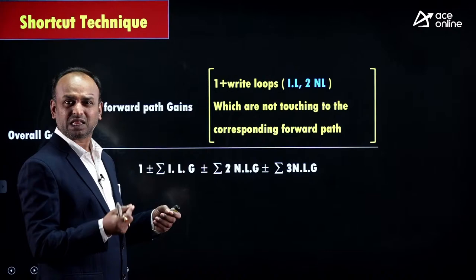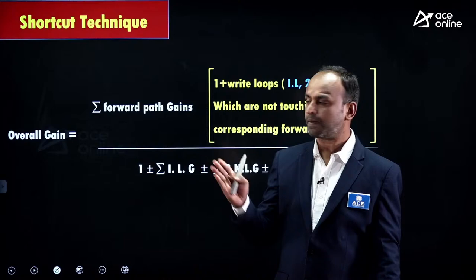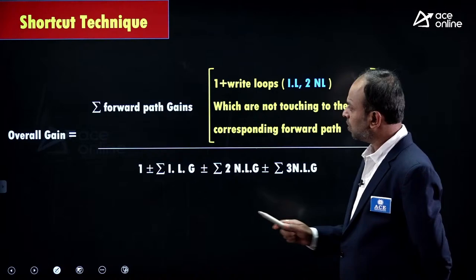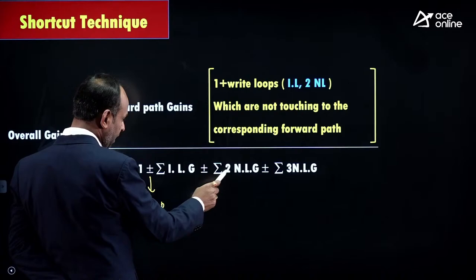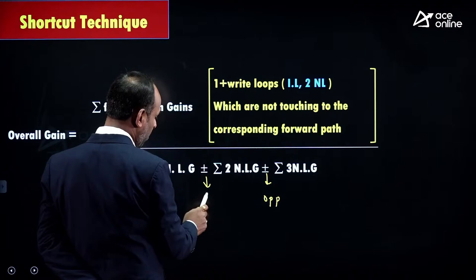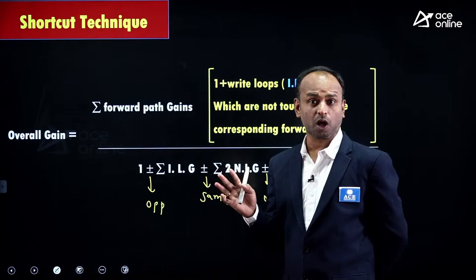Overall gain formula using Mason's: sum of forward path gains, divided by [1 + individual loop gains (opposite sign) + two non-touching loop gains (same sign for even, opposite for odd)]. Use this formula to solve all signal flow graph problems.